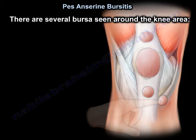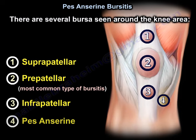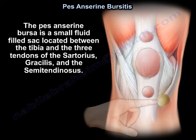There are several bursae seen around the knee area: the suprapatellar bursa, the prepatellar bursa — which is the most common type of bursitis around the knee — the infrapatellar bursa, and the pes anserine bursa.